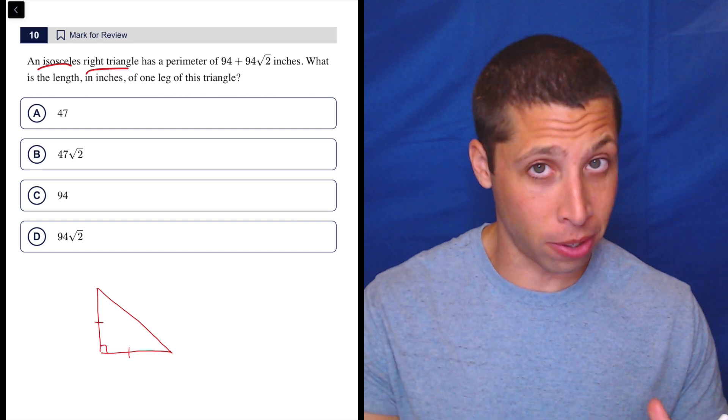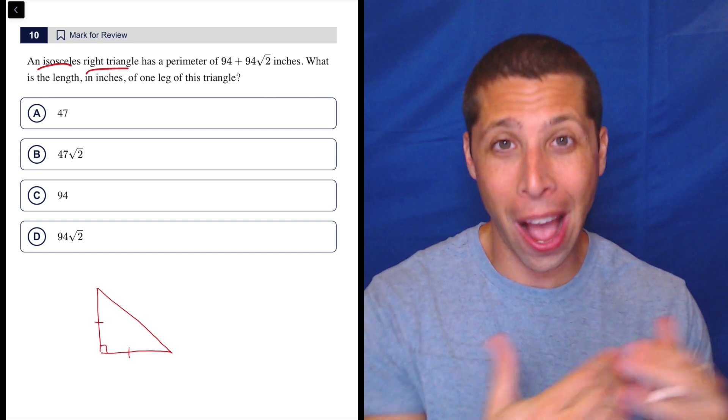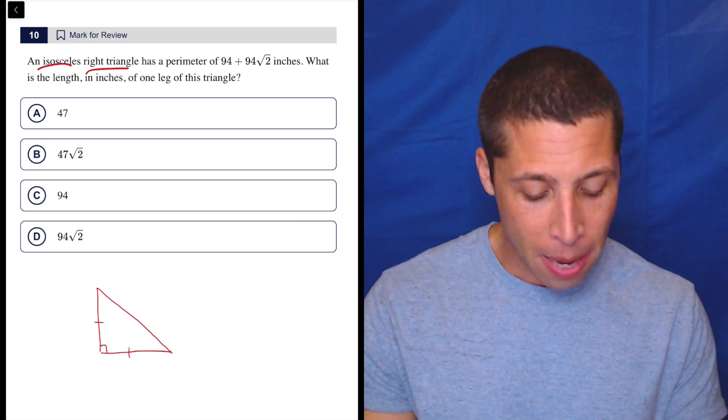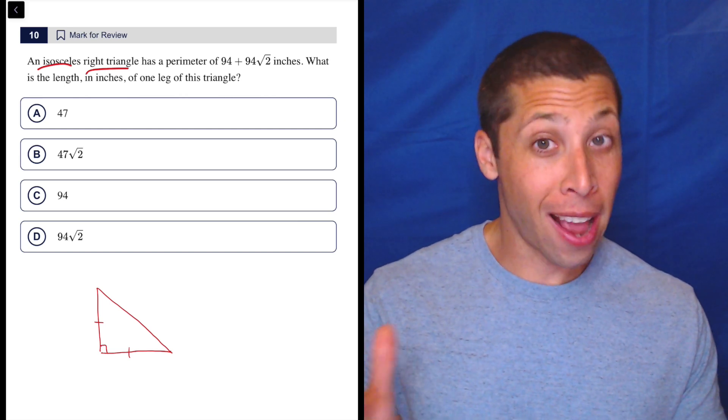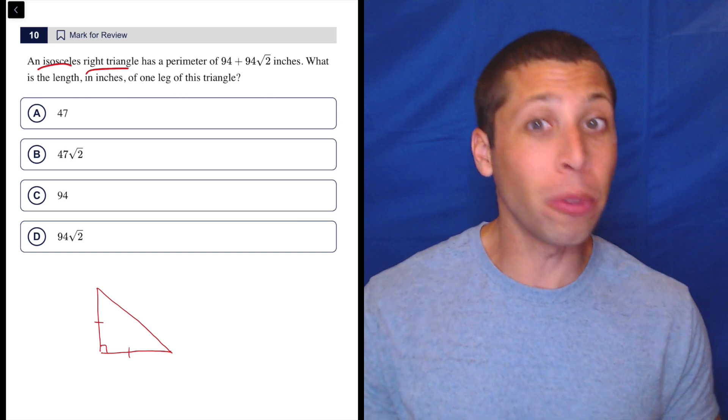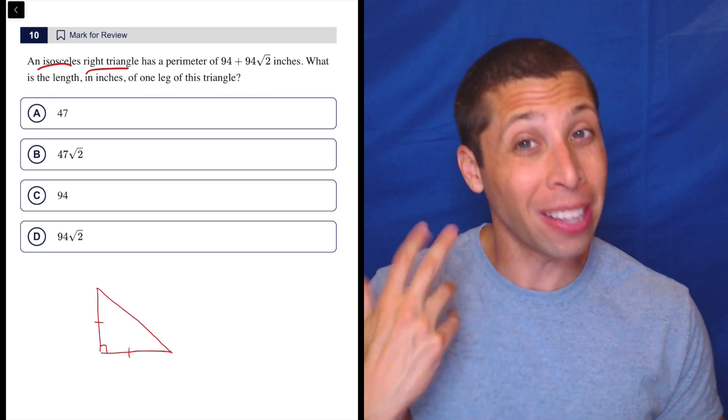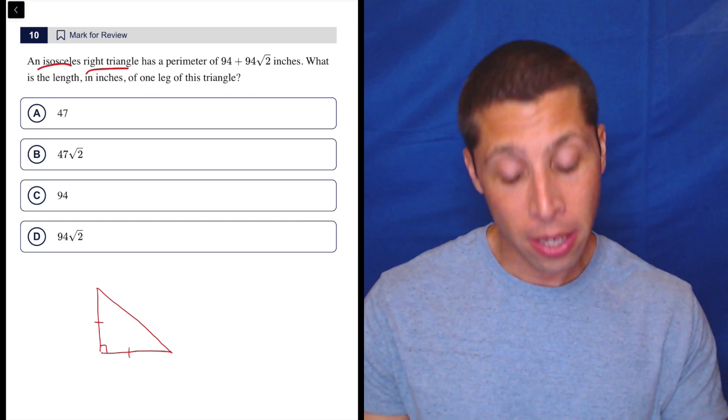Now, the reason that that's important is we actually know how isosceles right triangles work, because if those sides are the same, the angles opposite them have to be the same. Now, there's 180 degrees in a triangle. We've already got 90 taken care of by the right angle. That leaves 90 left, and 90 divided by 2 is 45.